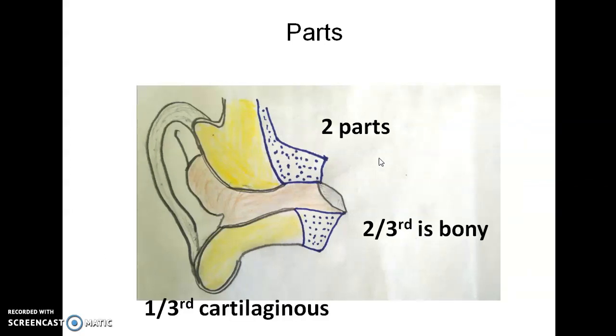There are two parts of the external ear and the external auditory canal. One which is closer to the external ear is made up of elastic cartilage. This is also cartilaginous. The outer part, outer one-third part, is also cartilaginous.